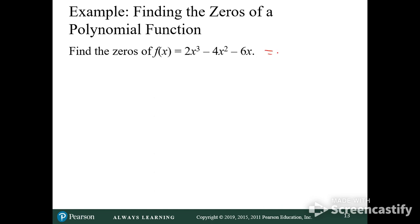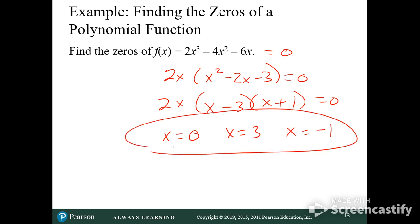Finding zeros. You set it equals zero. Is there anything I could factor out here? 2x. And I get x squared minus 2x minus 3. Could I factor that? x minus 3, x plus 1. So, x equals 0 because 2x equals 0. x equals 3 because x minus 3 equals 0. And x equals negative 1. That's the zeros of the function. Solving the equation and finding the zeros of the function.